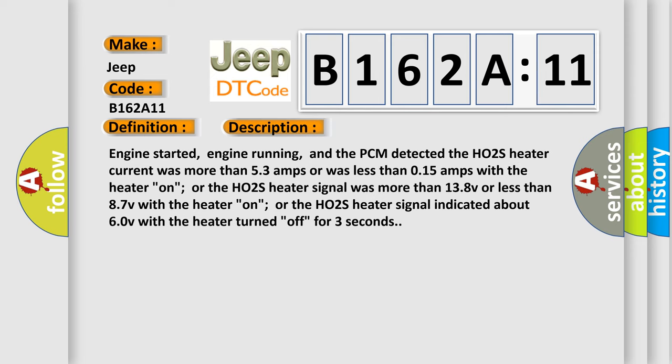And now this is a short description of this DTC code. Engine started, engine running, and the PCM detected the HO2S heater current was more than 53 amps or was less than 0.15 amps with the heater on. Or the HO2S heater signal was more than 138 V or less than 87 V with the heater on. Or the HO2S heater signal indicated about 60 V with the heater turned off for 3 seconds.